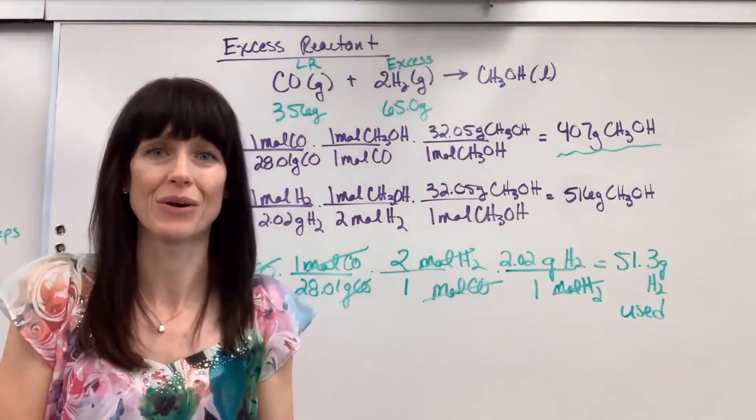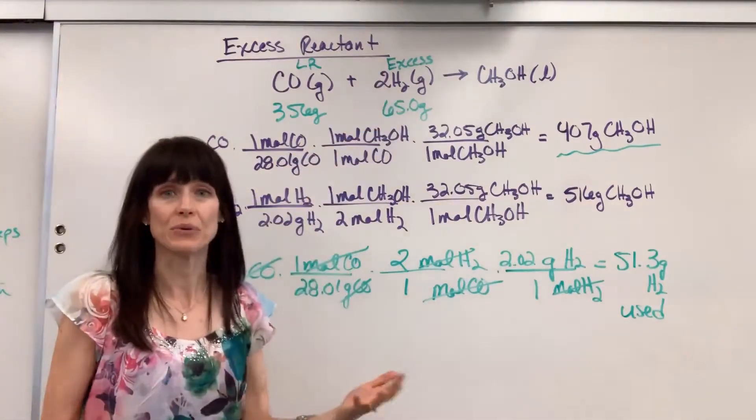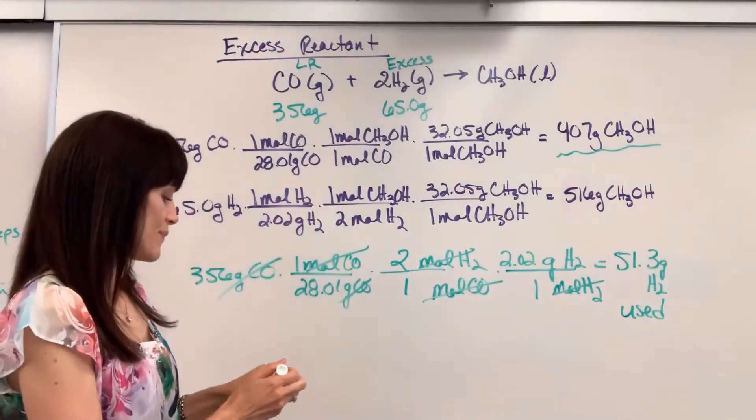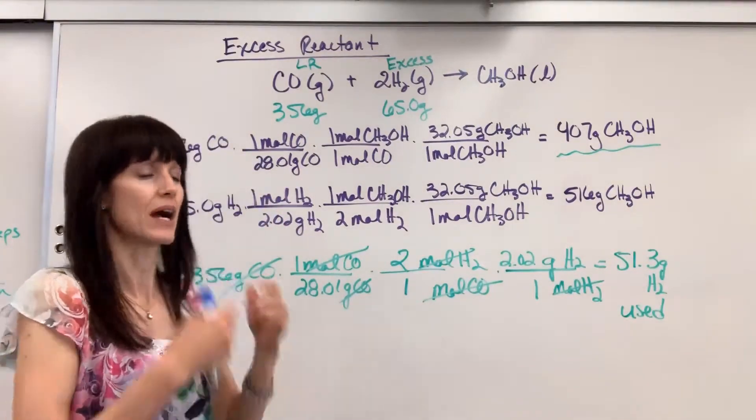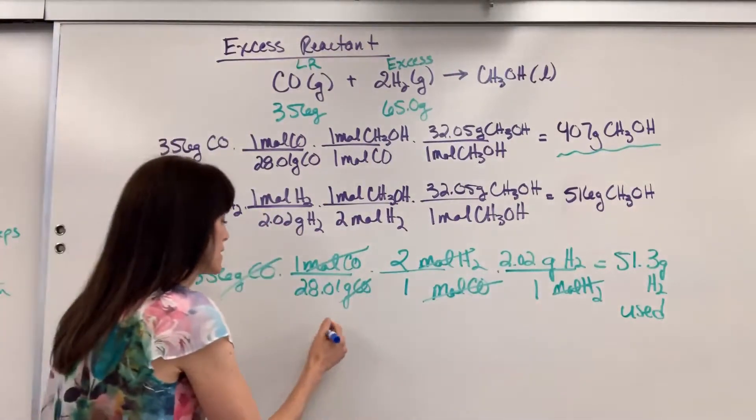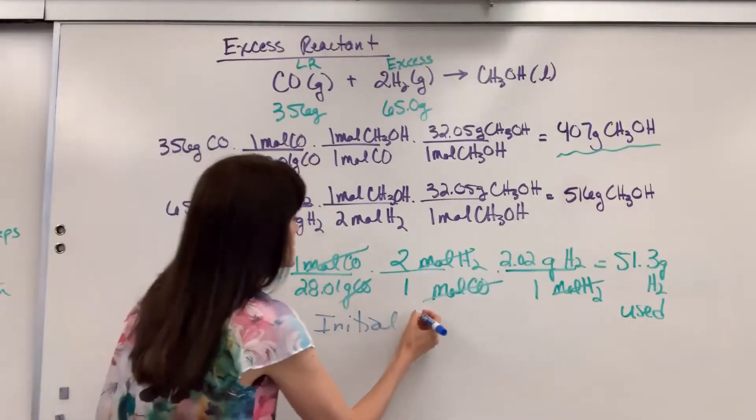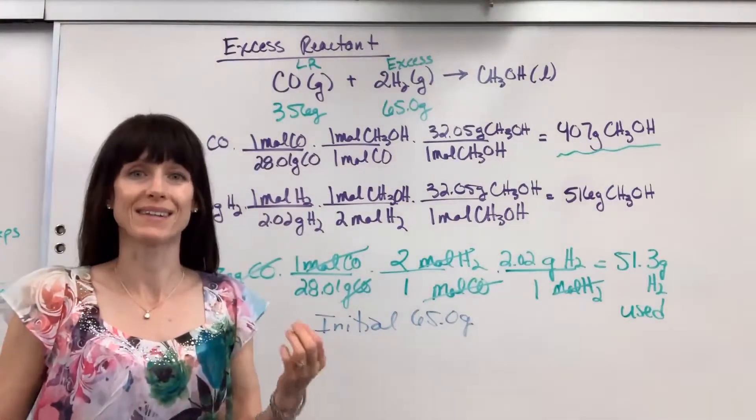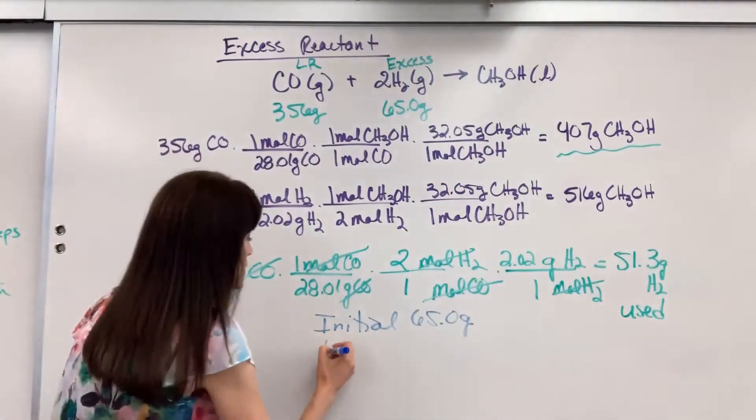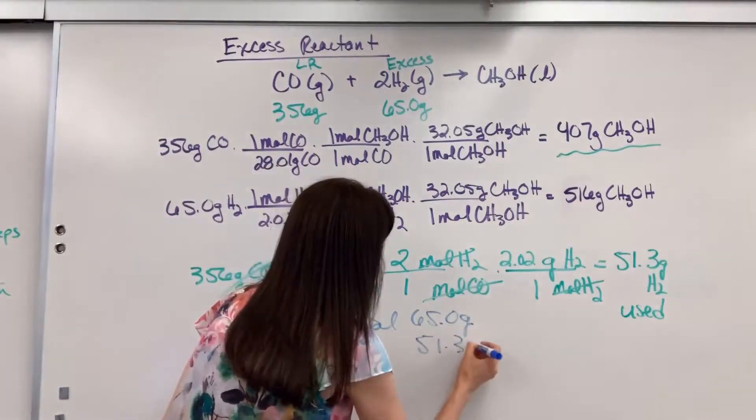The question you'll be asked though is how much is left over? What sits there unused? So for this really easy subtraction, you're going to take the initial amount, which was 65 grams, and simply subtract the amount used. So the used amount was 51.3 grams.